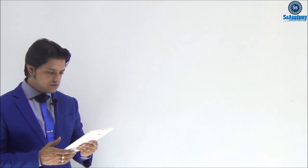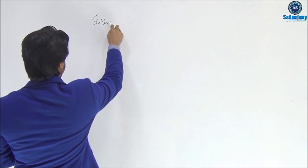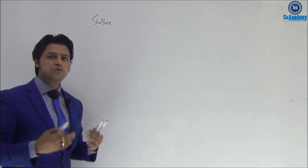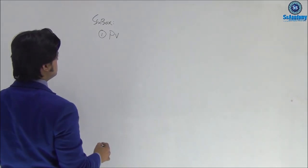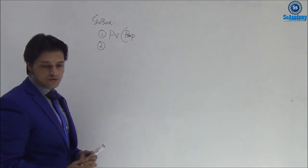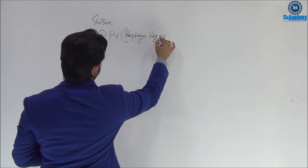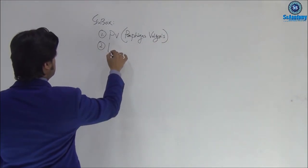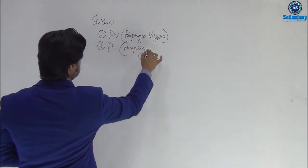Now I'd like to go through the blistering skin lesions — the differential diagnosis of vesicles, blisters, and bullae. The most commonly encountered bullous diseases I've listed are: number one, Pemphigus Vulgaris; number two, Pemphigoid; number three, Porphyria Cutanea Tarda; and number four, Dermatitis Herpetiformis. Write these down.